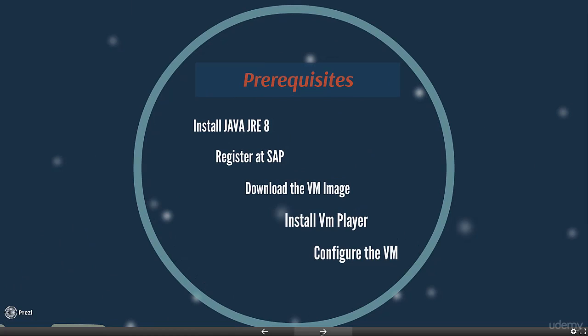First, you need to install Java JRE 8, which is useful for downloading the VM image from SAP. Next, you'll be registering at SAP for SAP HANA, then download the VM image, and then download and install the VM player, which is free for non-commercial use.